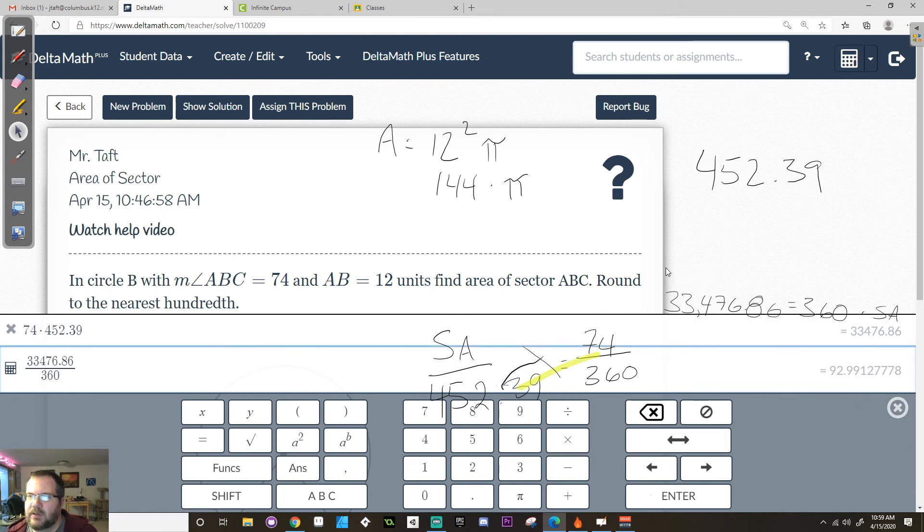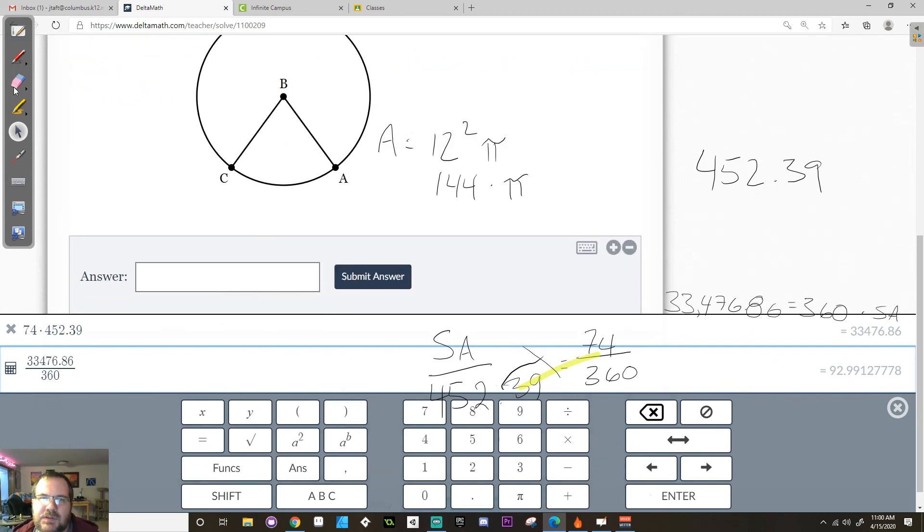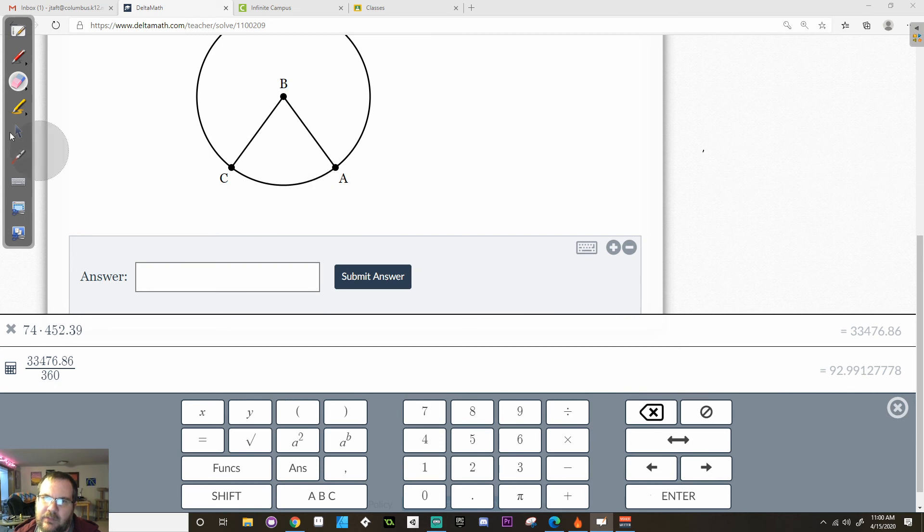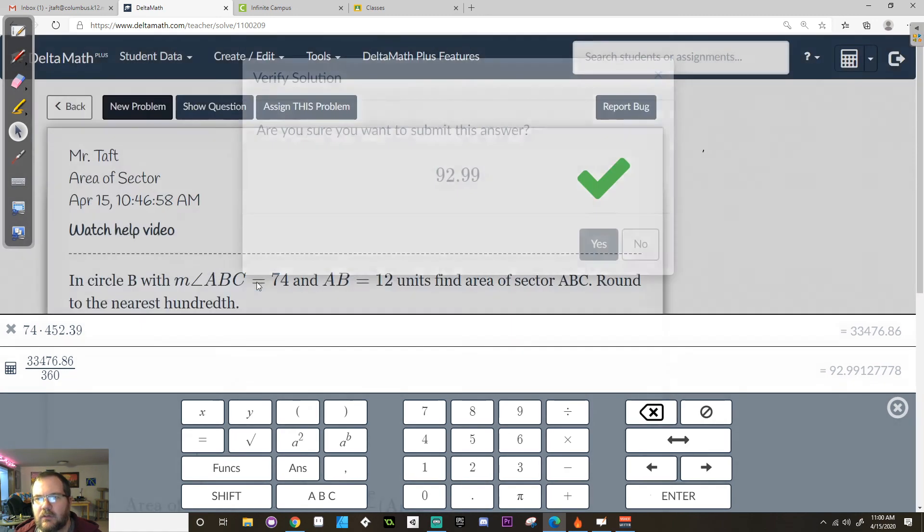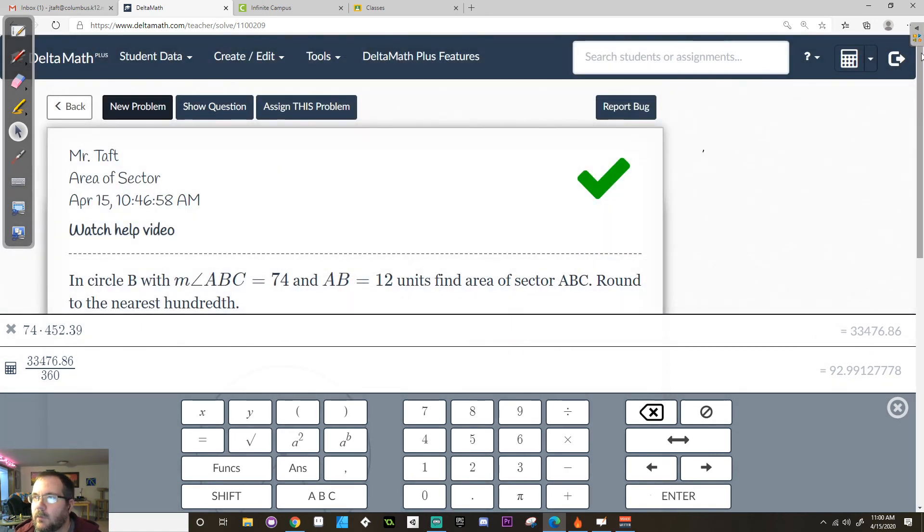If you had just used 3.14 for pi, pretty sure you would have been off since this is asking you to round to the nearest hundredths. So let's make sure that, guys, the correct advice here. There we go. So calculator is up here on the right and the pi symbol is down here by the decimal point. So apologies for that, that's my fault. Hope this gets you guys back on track.